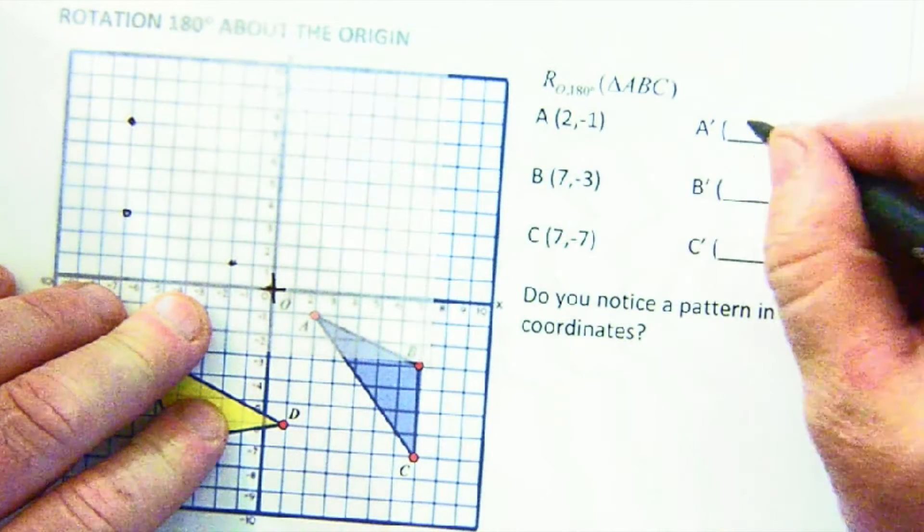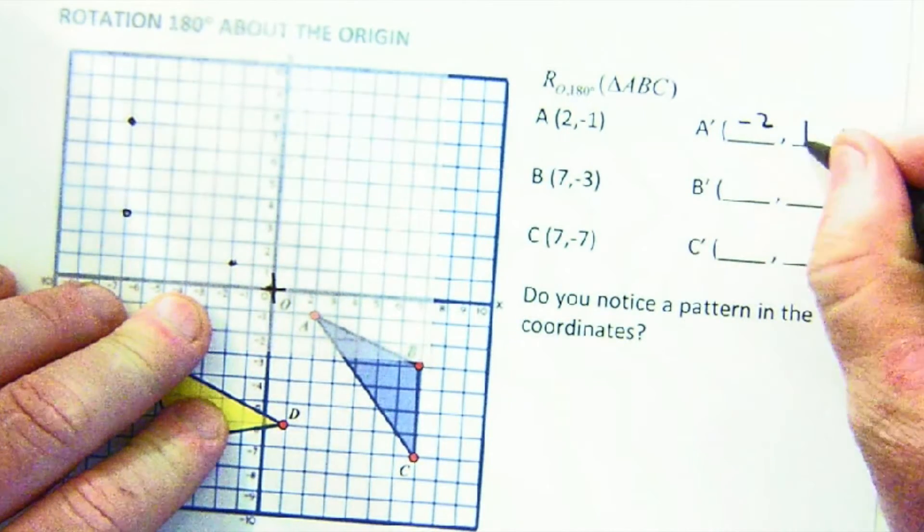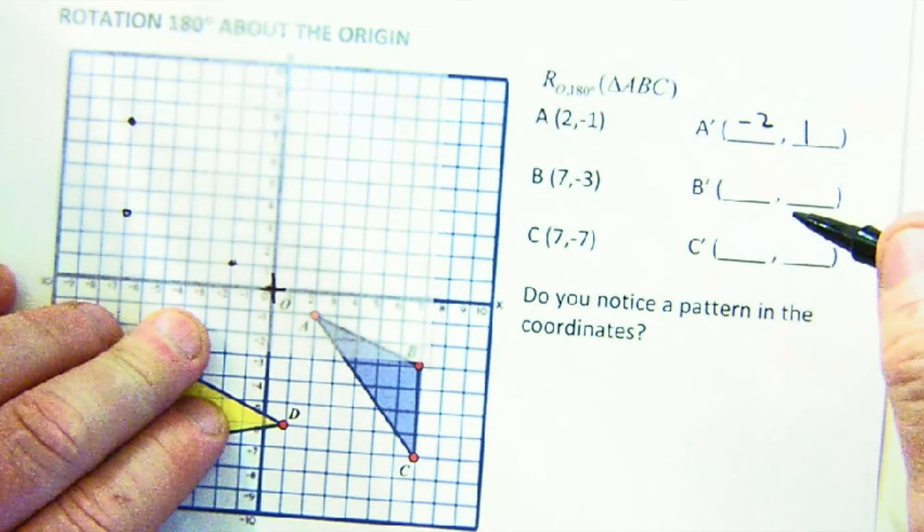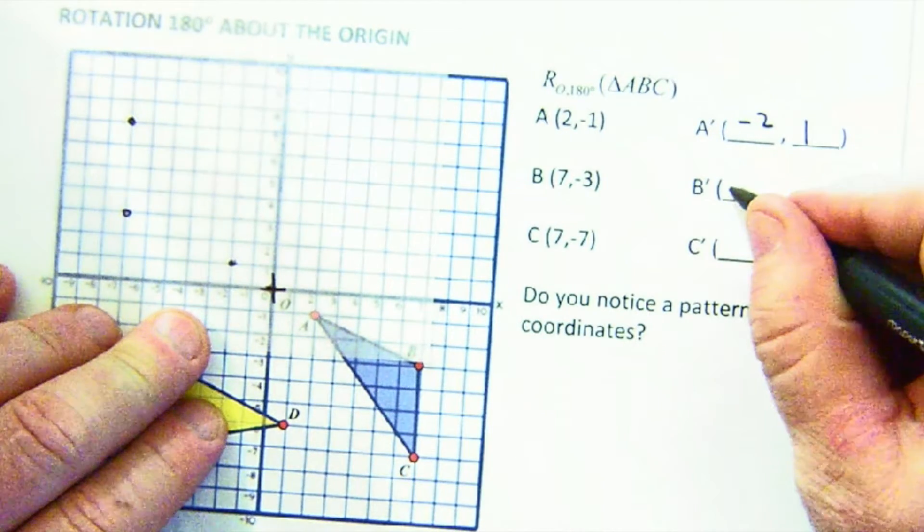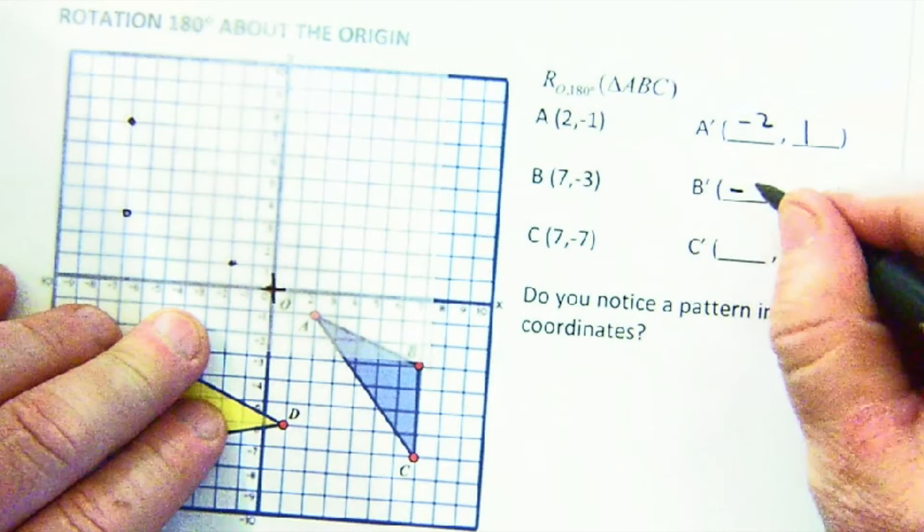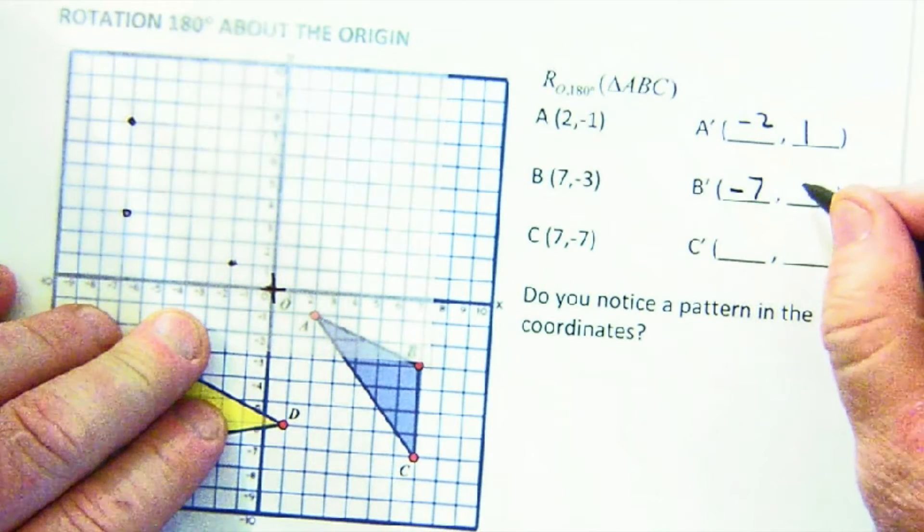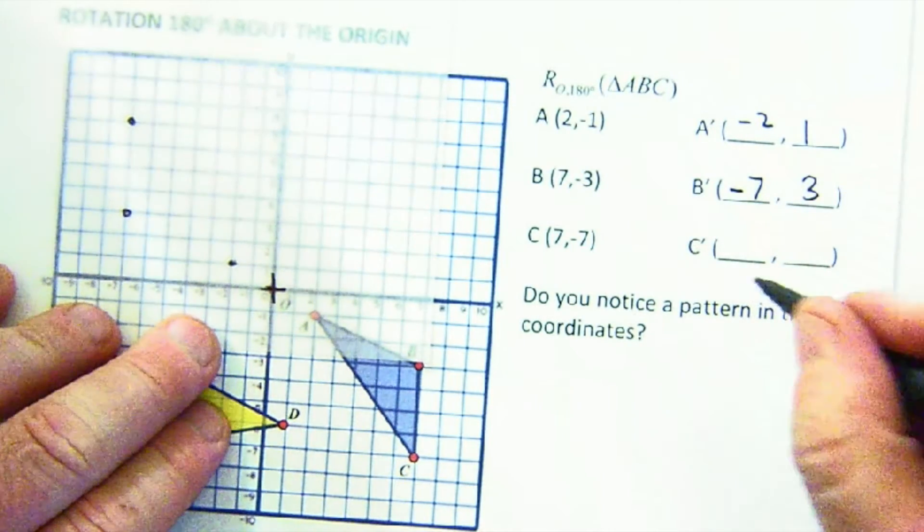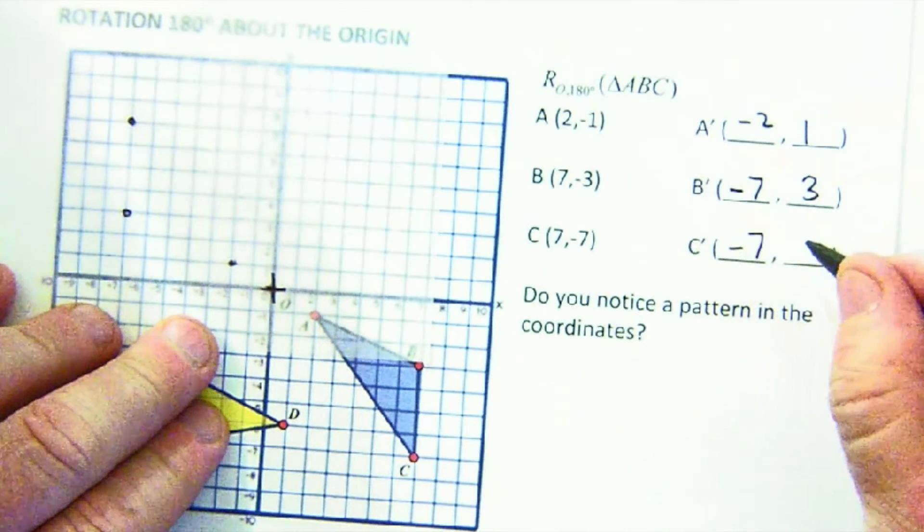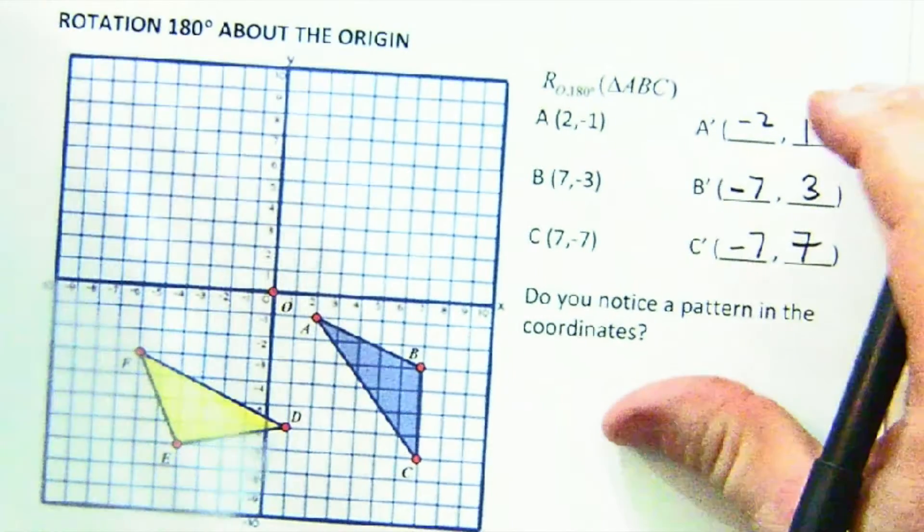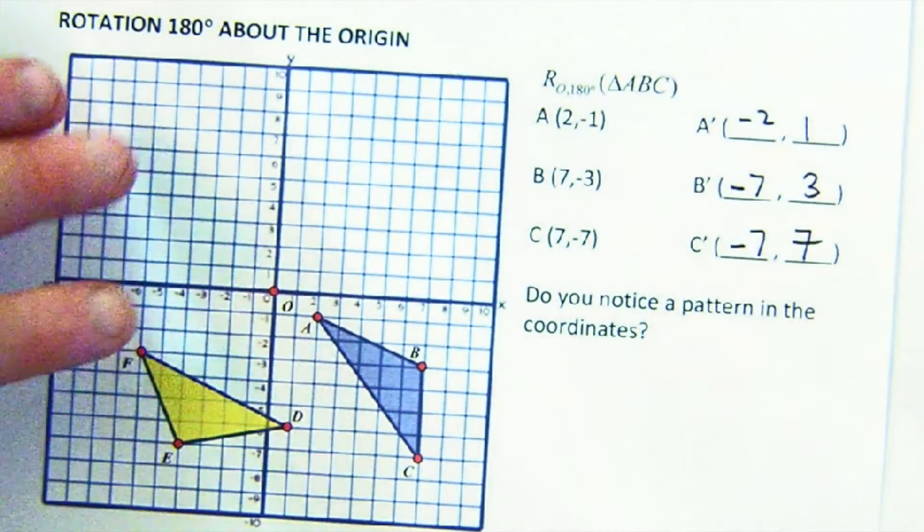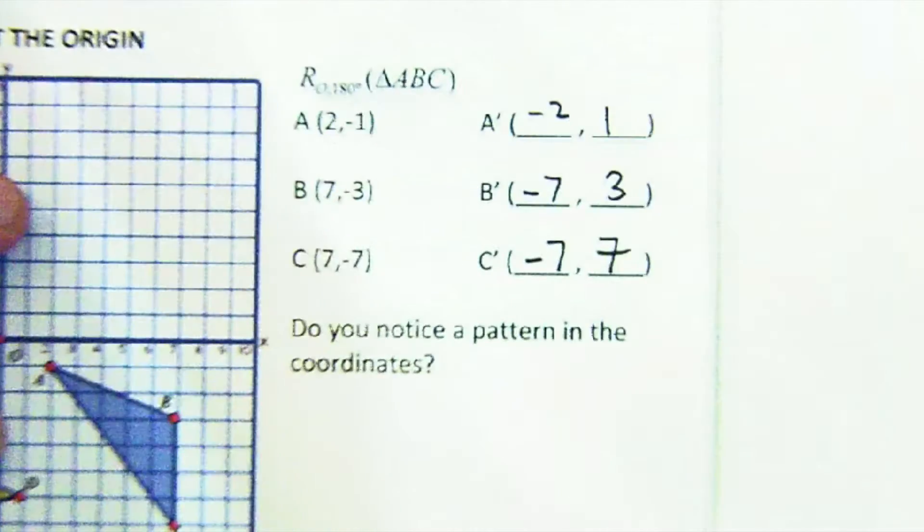There's 90 to there and I go another 90 to get to 180. So I can record that I got to (-2, 1), I got to (-7, 3), and I got to (-7, 7). Just like that, we've gathered some data.